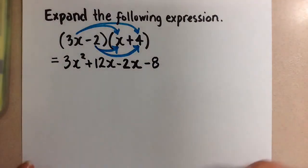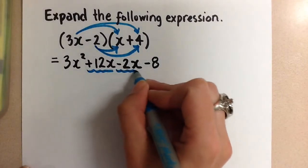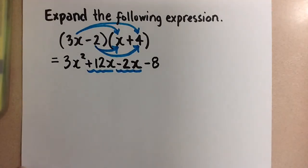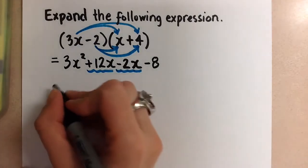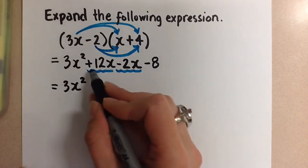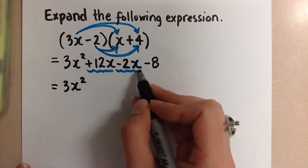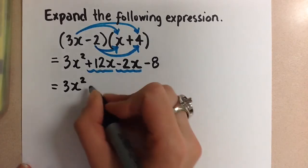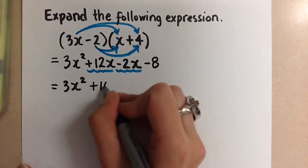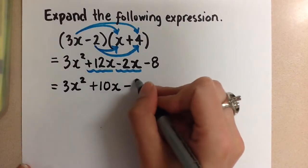So here we're almost done expanding. We just have those middle two terms that are like terms, so we do have to combine them together before we can be finished with this. So the 3x squared stays the same. We have a positive 12x minus 2x. So 12 minus 2 is positive 10x. And then we're left with the minus 8 at the end.